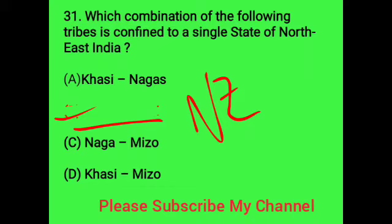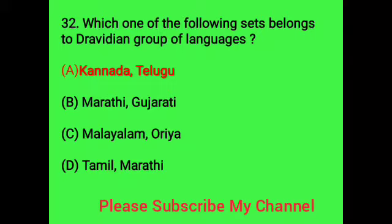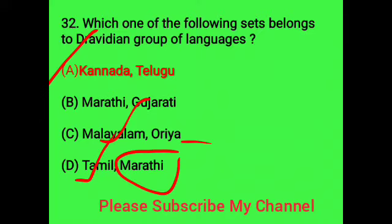Question thirty-one: which of the following states belong to the Dravidian group of languages? Kannada and Telugu are Dravidian languages. Marathi and Gujarati are not. Malayalam is also related to the Dravidian group, but Oriya is not. Tamil is related to the Dravidian group but Marathi is not. Therefore, Kannada and Telugu are both related to the Dravidian group of languages, and this is the correct option.